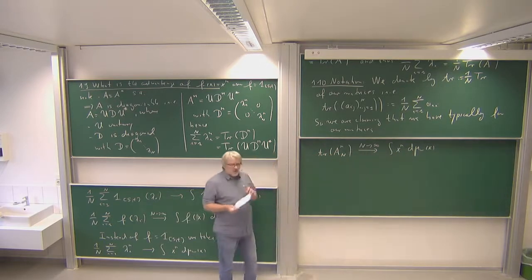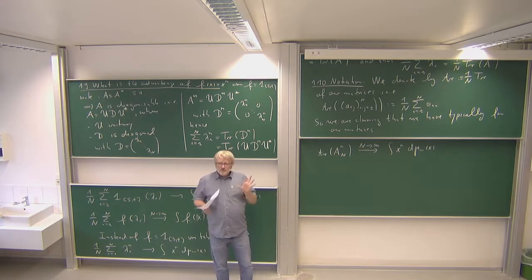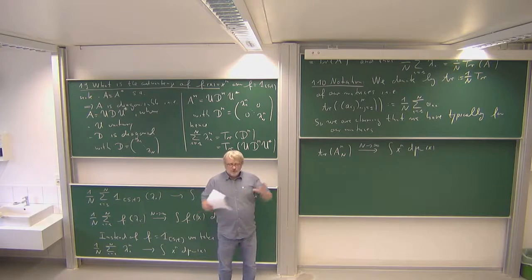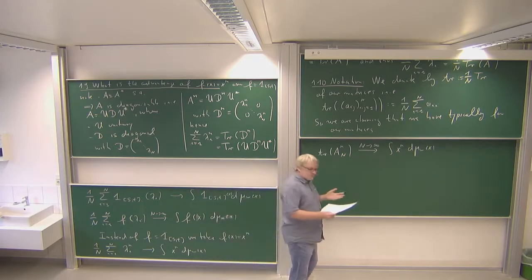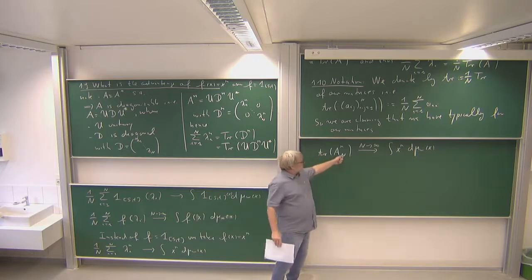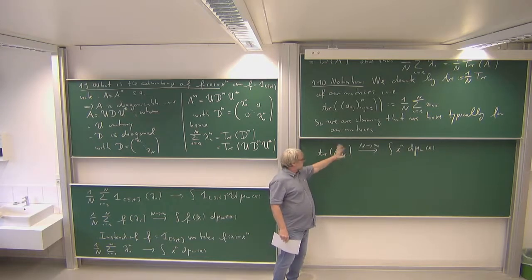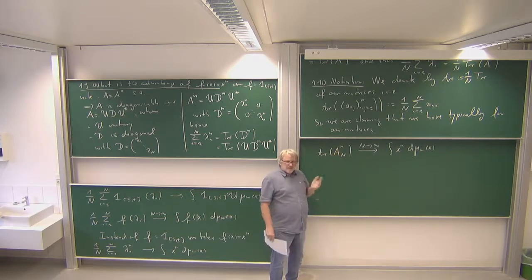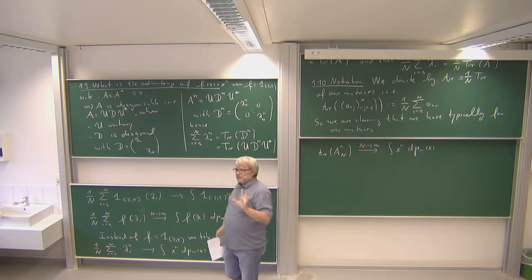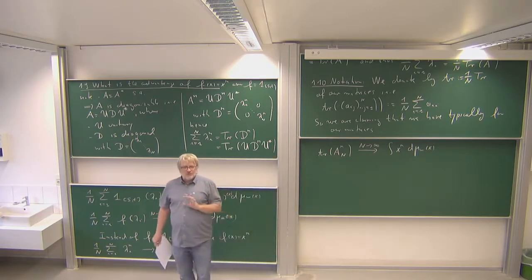We should think about scaling. The matrices I had up to now have not been scaled, and they will not converge. We have essentially one choice: we want all the traces to converge. The first moment is zero, but the second moment for the matrices we've used does not converge. So we should divide by something so that it converges. Once we fix the scaling so the second moment converges, everything else should be fixed.